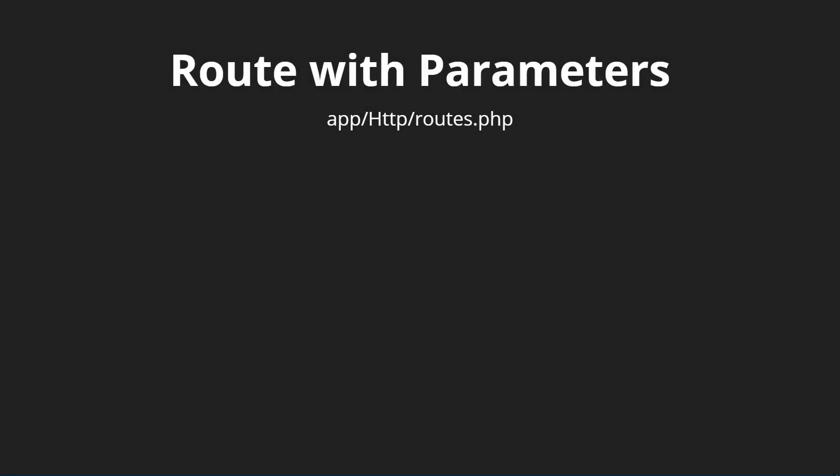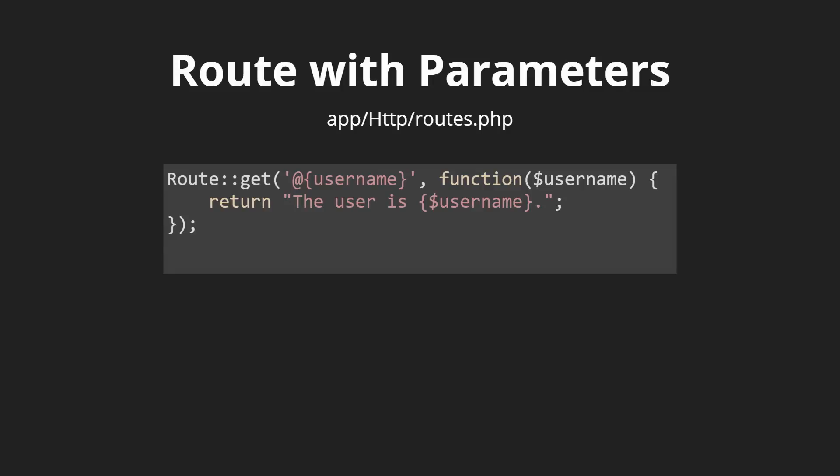The next thing we'll deal with are routes with parameters. We're not always going to have normal routes like slash about or slash contact — we're going to have routes that have variables in them. Maybe we have a post route with a variable for the post slug, or a username route with a variable for the username. Those routes will use brackets around the variable name we want.